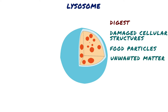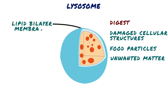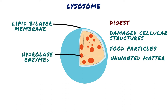A lysosome is surrounded by a typical lipid bilayer membrane and is filled with large numbers of small granules, 5 to 8 nanometers in diameter, which are protein aggregates of as many as 40 different hydrolase enzymes.